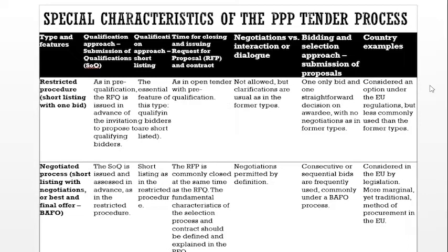Negotiated process — shortlisting with negotiations or best and final offer (BAFO): the SOQ is issued and assessed in advance as in the restricted procedure. Shortlisting as in the restricted procedure. The RFP is commonly closed at the same time as the RFQ. The fundamental characteristics of the selection process and contracts should be defined and explained in the RFQ. Negotiations are permitted by definition. Consecutive or sequential bids are frequently used, commonly under a BAFO process. Considered in the EU by legislation; a more marginal yet traditional method of procurement in the EU.